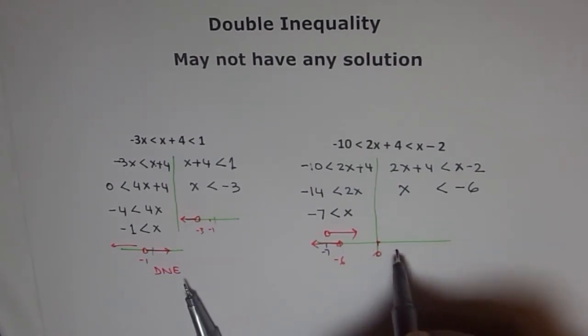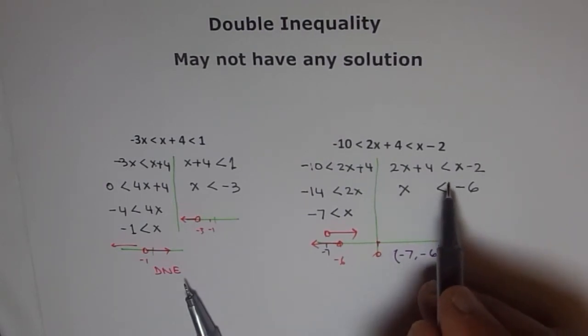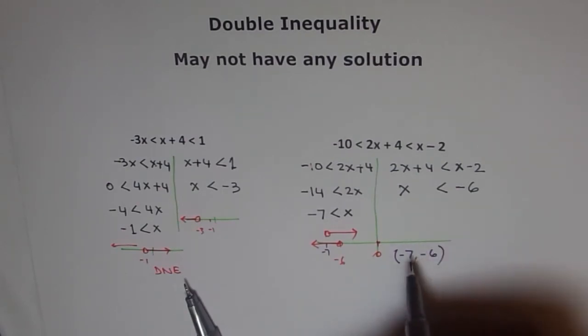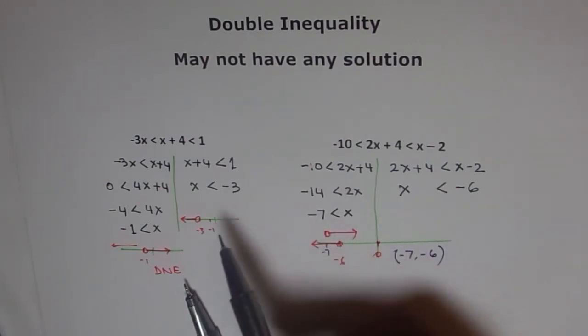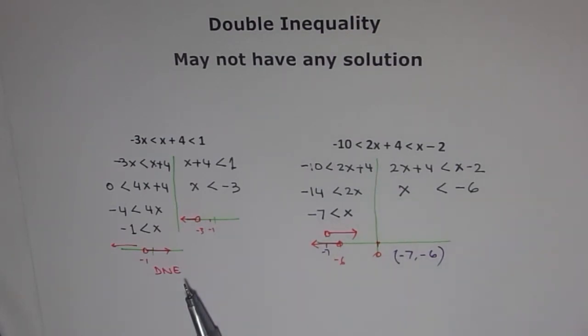Therefore, the solution is from minus 7 to minus 6. Not including them since the inequality does not have equal to sign. Do you get it? So here, we have a solution. But in this case, we don't have a solution. So it is to make you realize that some inequalities may not have a solution. Okay? Thank you.